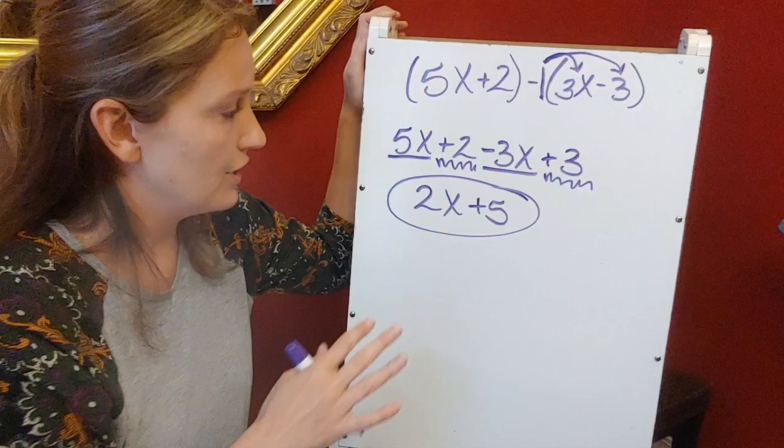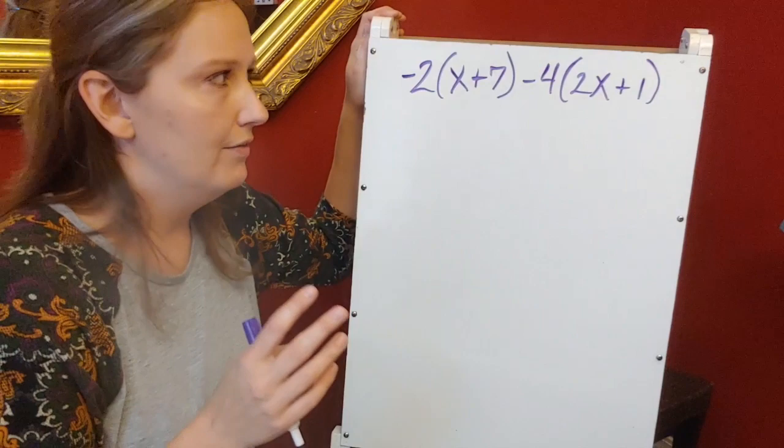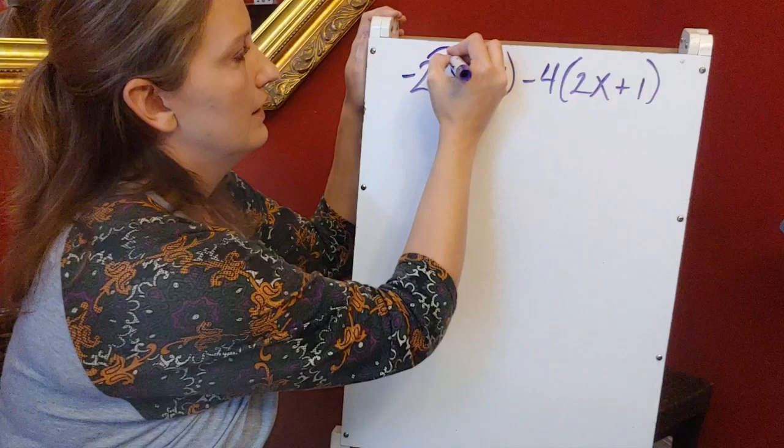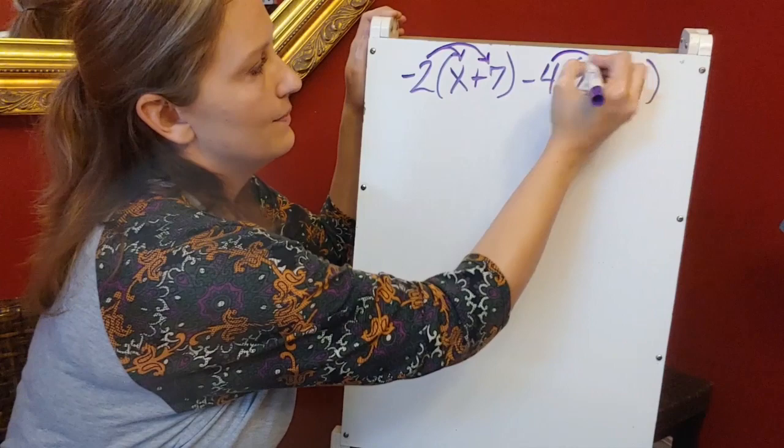So let's look at what happens whenever we have constants outside of our parentheses. We are going to have to distribute twice to solve this. This negative 2 has to be distributed to this first set of parentheses and this negative 4 has to be distributed to the second set of parentheses.